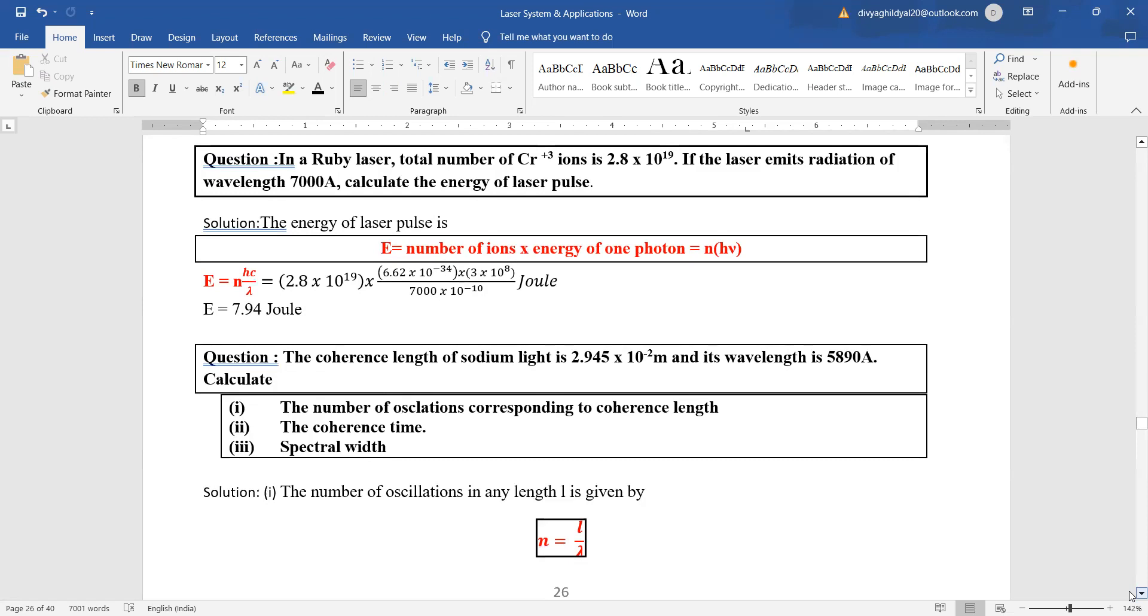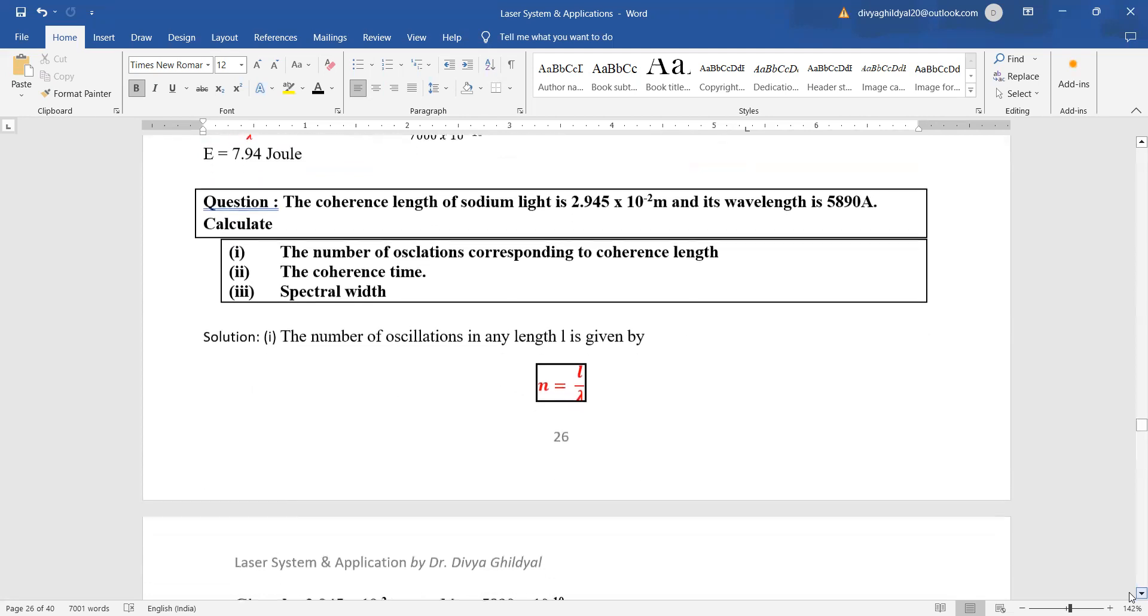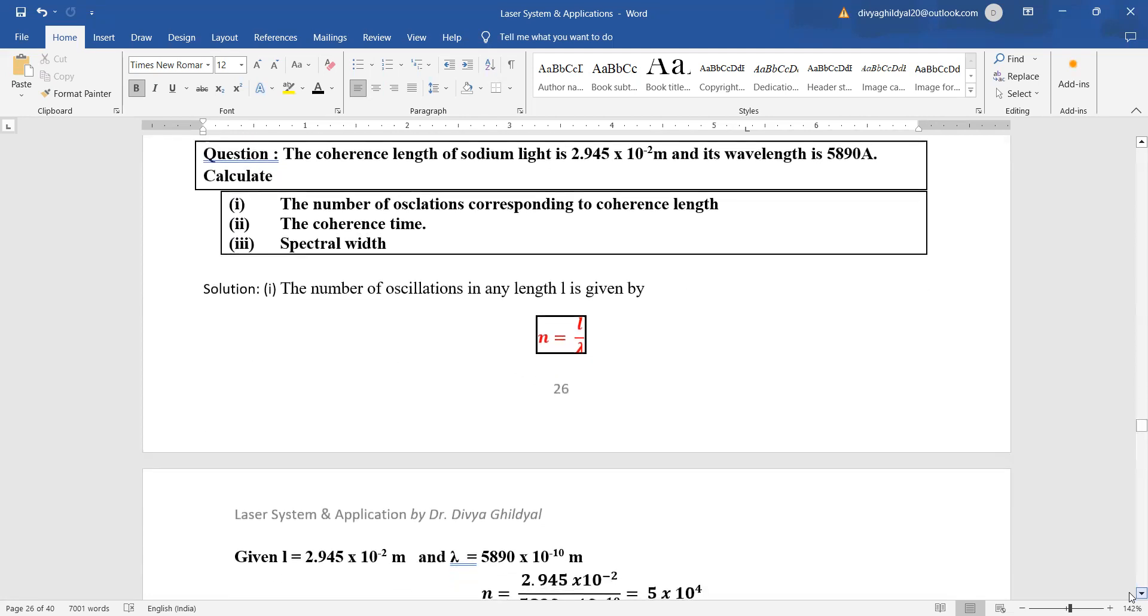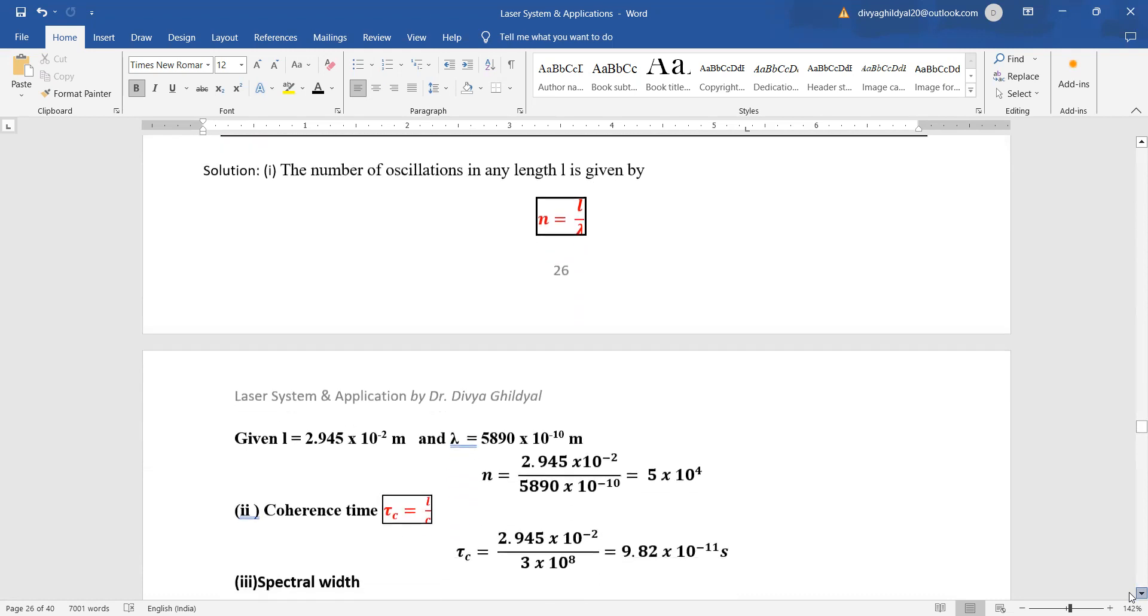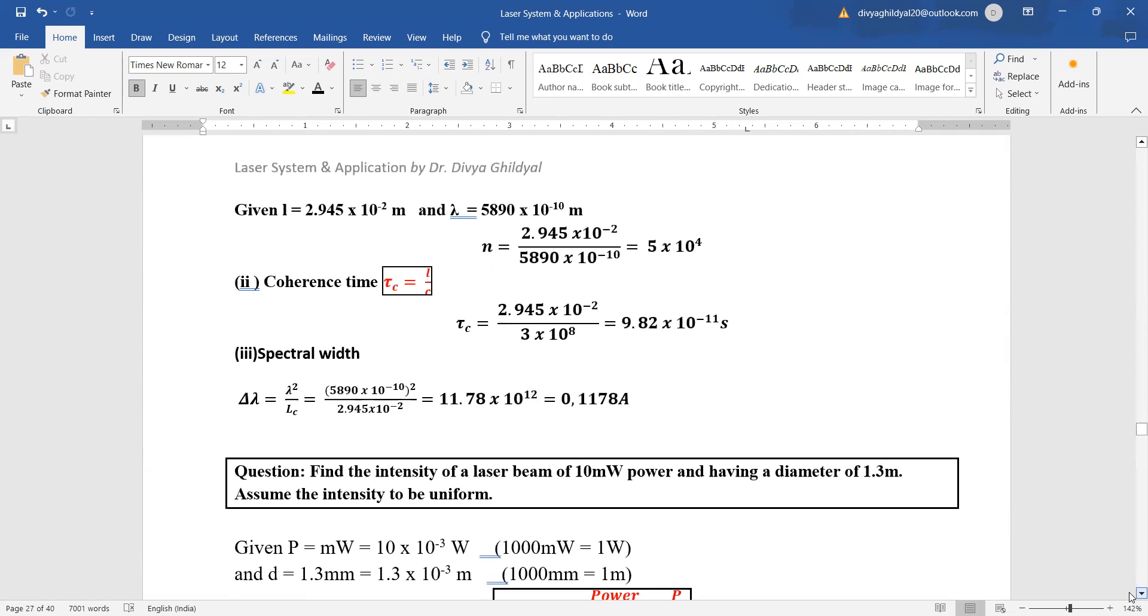The coherence length of sodium light—this is very important, many times it has been asked. The coherence length of sodium light is 2.945 times 10 to the power minus 2 meter, and its wavelength is 5890 angstrom. Find the number of oscillations corresponding to coherence length, the coherence time, and the spectral width.